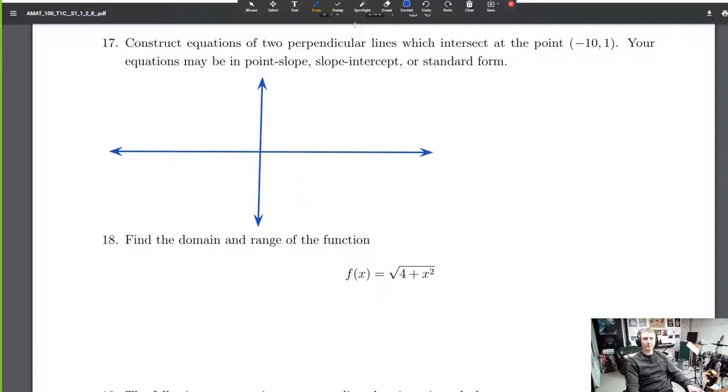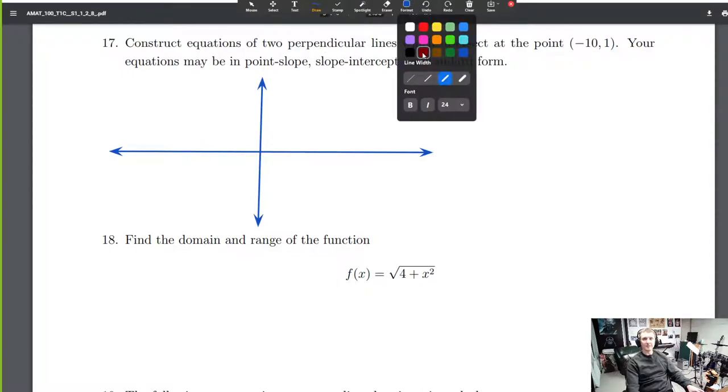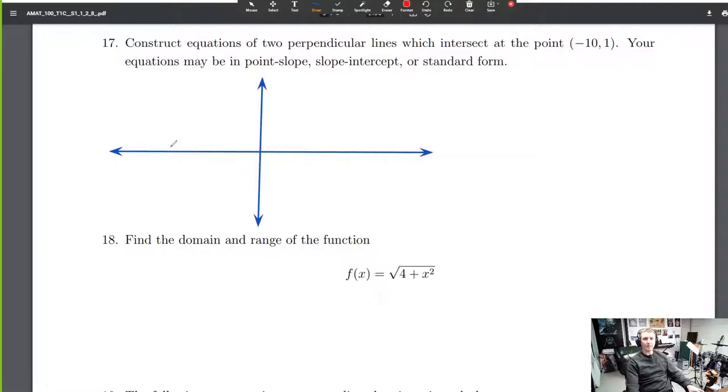You don't need to graph them. You just need the equations, but I'm going to graph them for you because this is really easy. Negative 10, 1. So let's say this is negative 10, and this is 1. So here's this point.